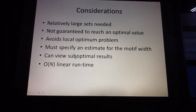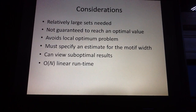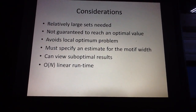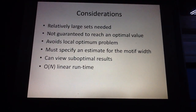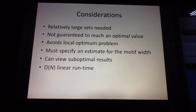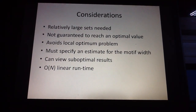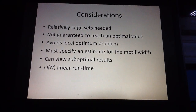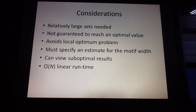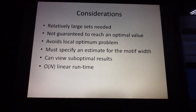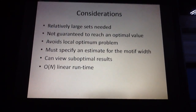A good thing about the Gibbs sampling method is that it's a very iterative process, and during each iteration you can inspect how the probability tables look and how the motif positions move. Sometimes the final convergent answer may not actually be the most optimal result, and you may need to look at suboptimal results or motif positions from previous iterations. Some of those previous iterations may have motif positions that visually look better than the actual convergent answer, so Gibbs sampling gives us a way to inspect previous iterations and manually check for better results.